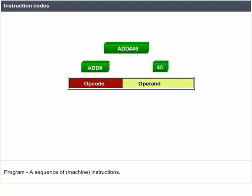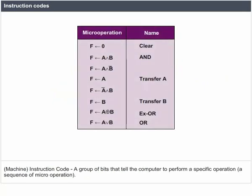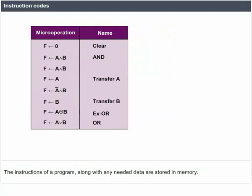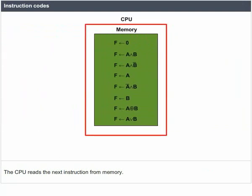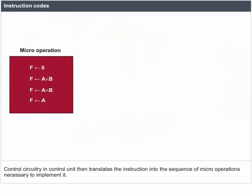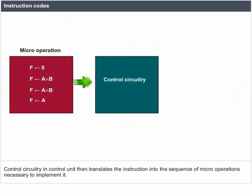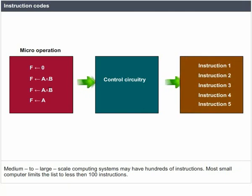A program is a sequence of machine instructions. A machine instruction code is a group of bits that tell the computer to perform a specific operation — a sequence of micro-operations. The instructions of a program along with any needed data are stored in memory. The CPU reads the next instruction from memory, places it in an instruction register, and control circuitry in the control unit translates the instruction into the sequence of micro-operations necessary to implement it. Medium to large-scale computing systems may have hundreds of instructions; most small computers limit the list to less than 100.